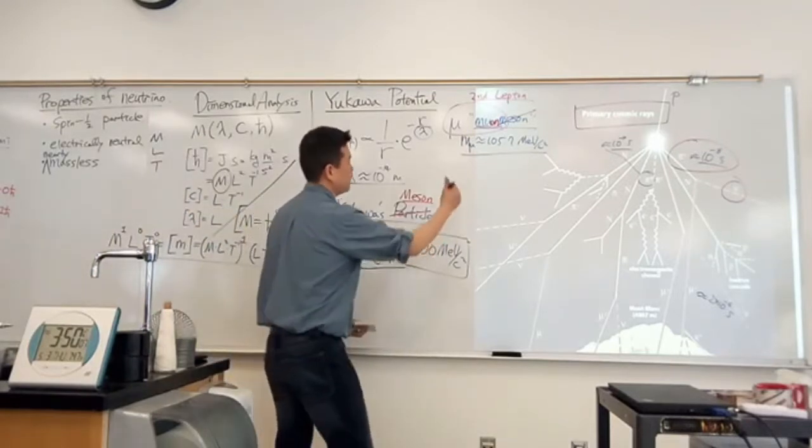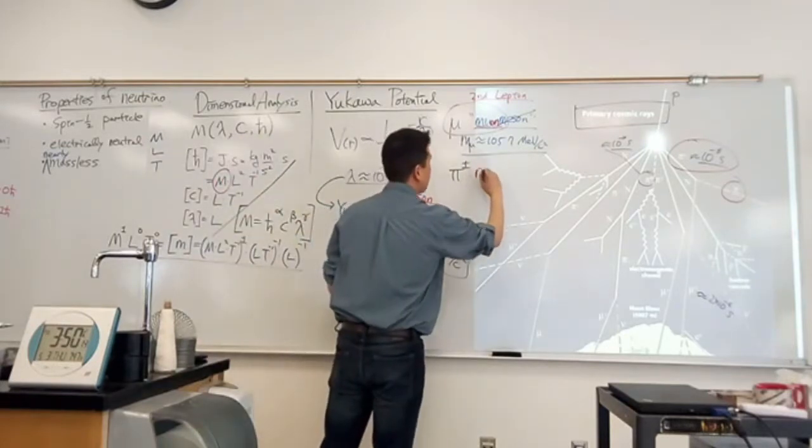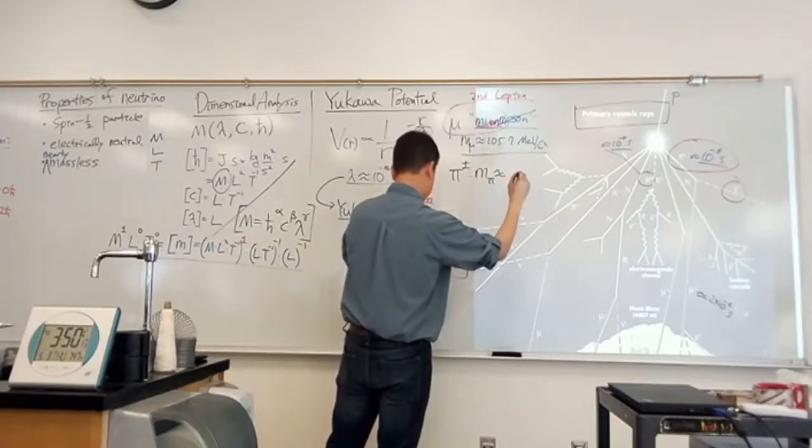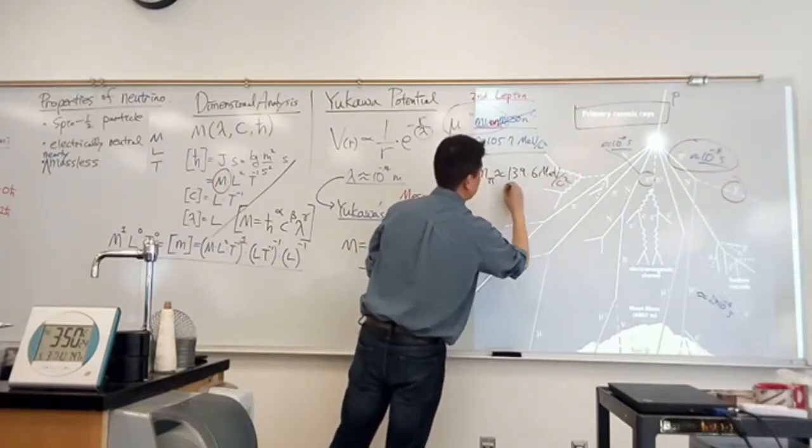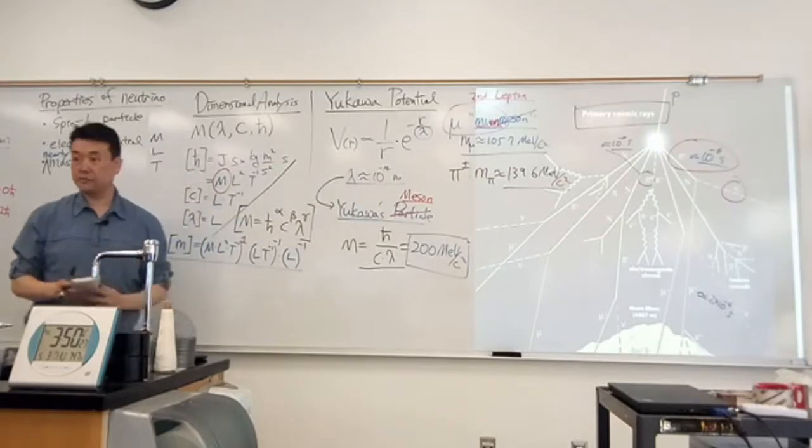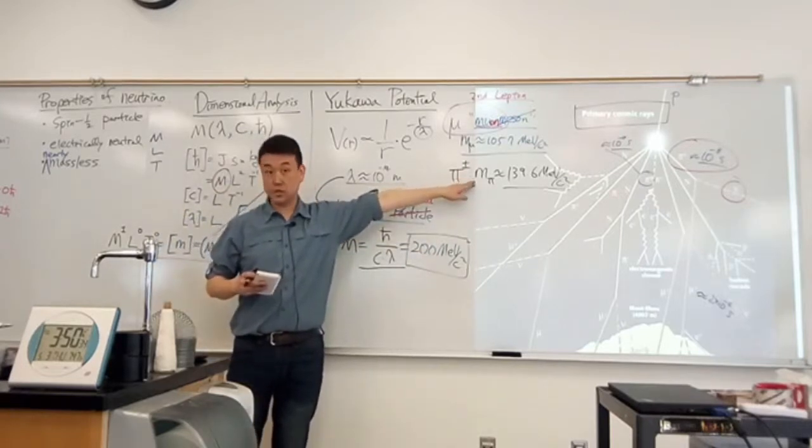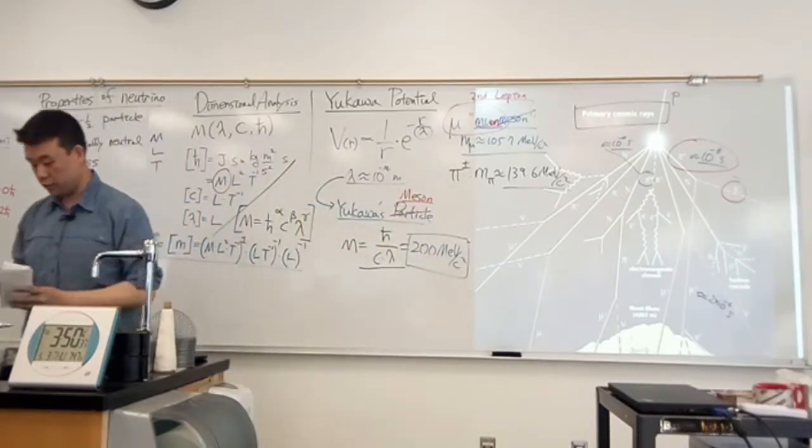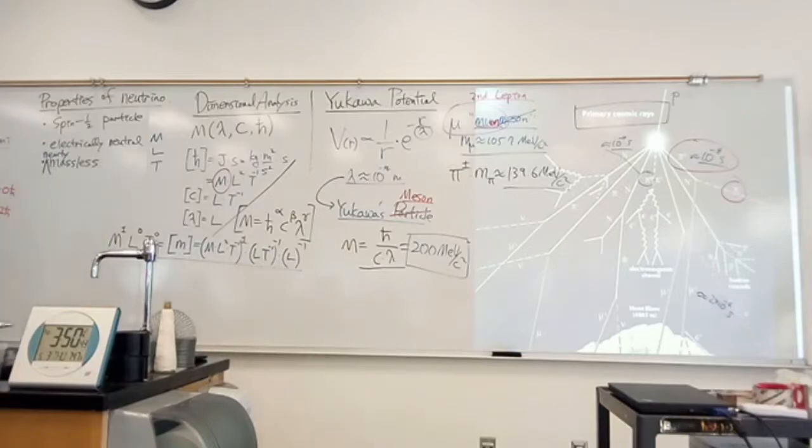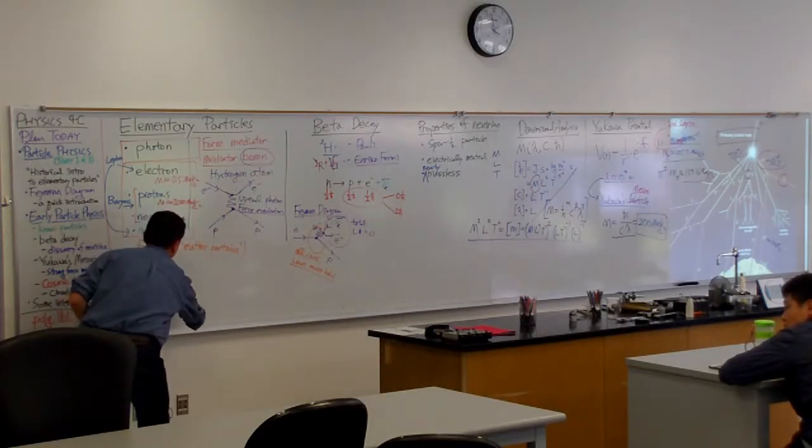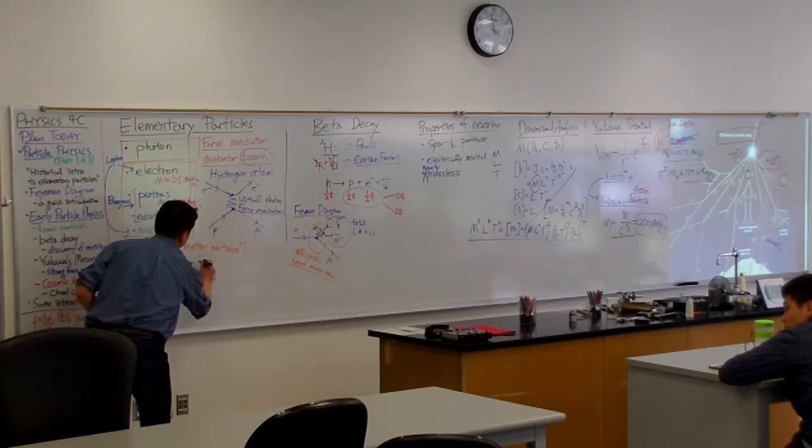Mass of the charged pion, pi plus minus, they are particle, antiparticle of each other. The mass of the pion is about 139.6 MeV per c squared. This is still in the correct range for Yukawa's meson. And this is now confirmed as Yukawa's meson. The early model of nuclear interaction, the strong force, is to treat interaction between neutrons and protons as being mediated by exchange of pions.